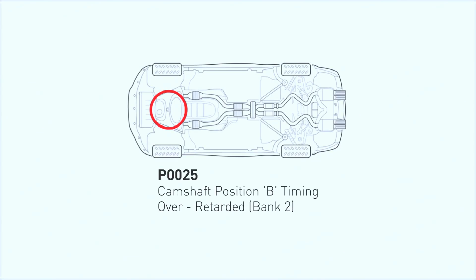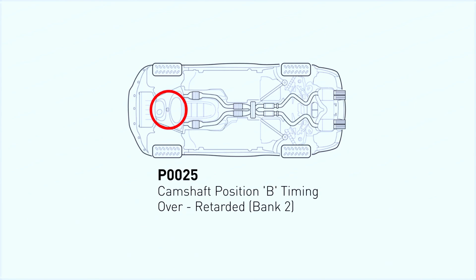It stands for camshaft position timing over retarded bank 2 exhaust. In simpler terms, it means the engine control module (ECM) is detecting that the timing of the exhaust camshaft on bank 2 is off. This can lead to performance problems, rough idling, or even stalling.